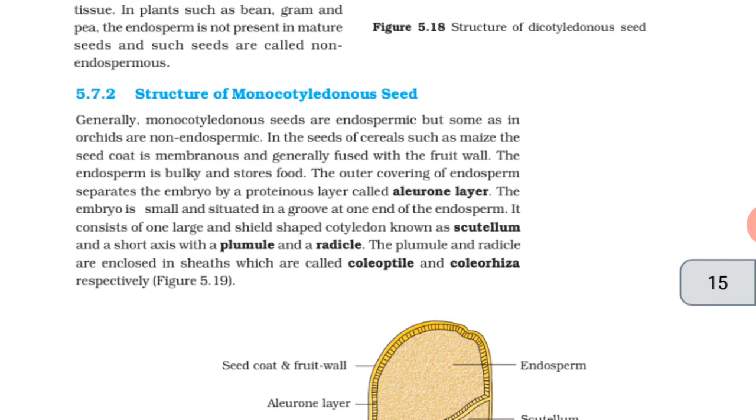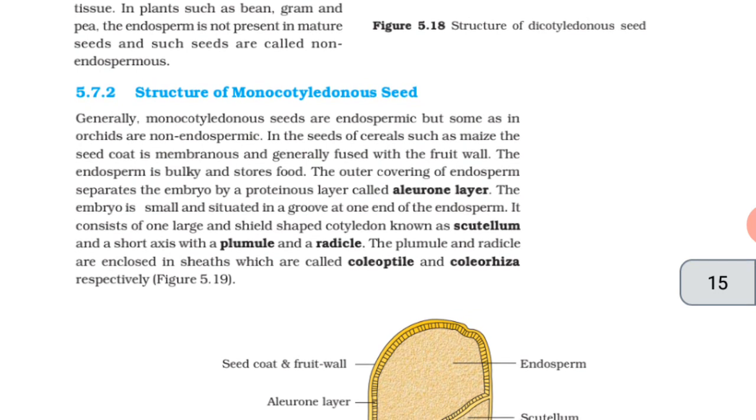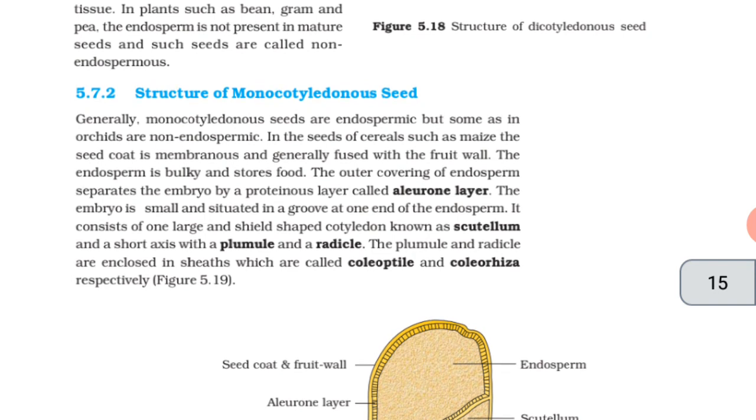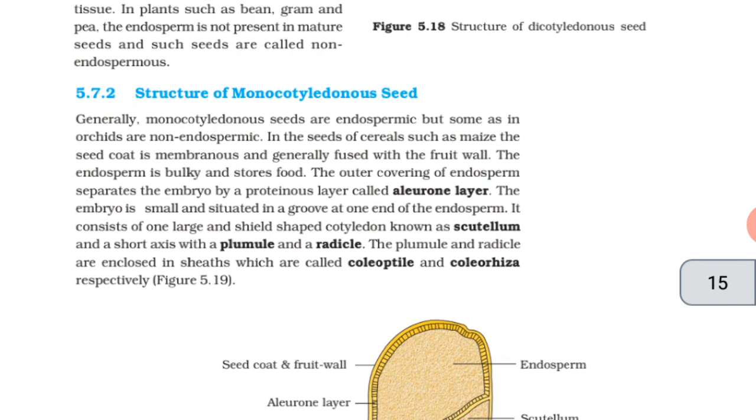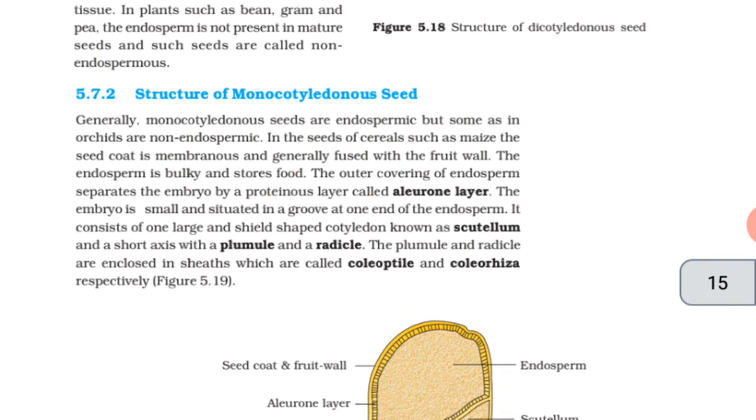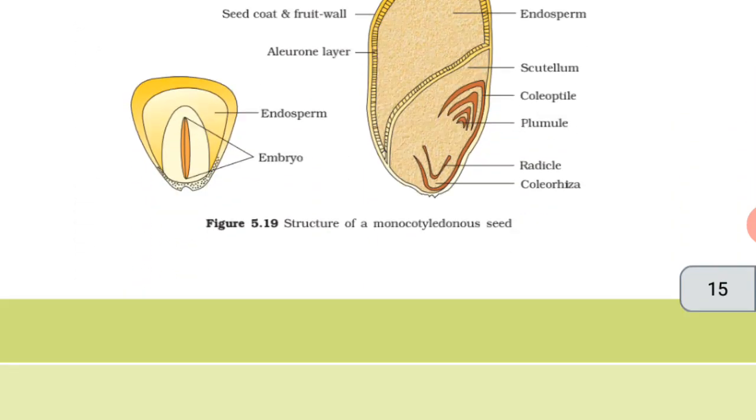Structure of monocotyledonous seeds. Generally, monocotyledonous seeds are endospermic but some as in orchids are non-endospermic. In the seeds of cereals such as maize, the seed coat is membranous and generally fused with the fruit wall. The endosperm is bulky and stores food. The outer covering of endosperm separates the embryo by a proteinaceous layer called aleurone layer. The embryo is small and situated in a groove at one end of the endosperm. It consists of one large and shield-shaped cotyledon known as scutellum and a short axis with the plumule and a radicle. The plumule and radicle are enclosed in sheaths which are called coleoptile and coleorhiza respectively.